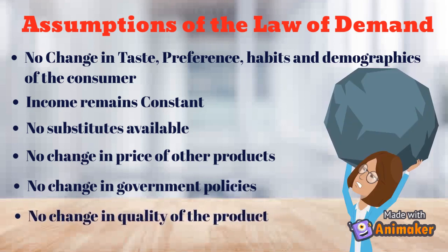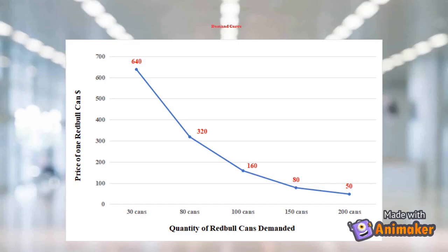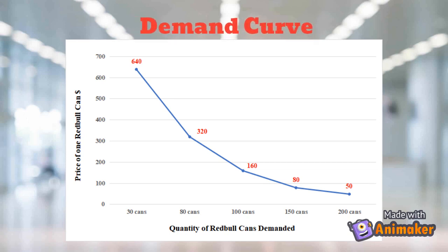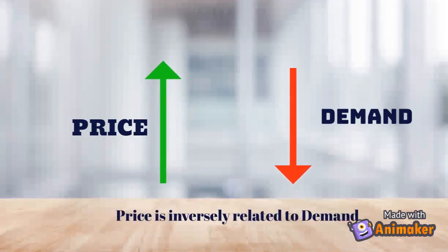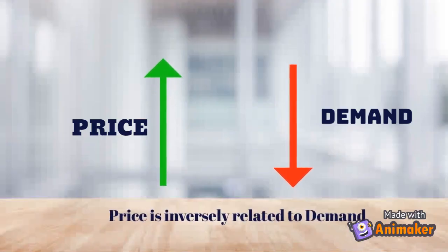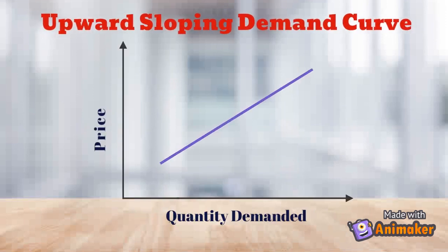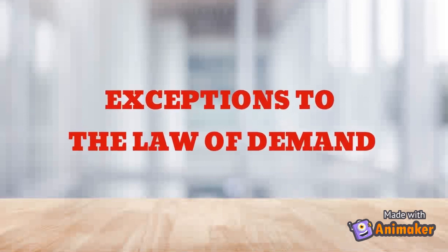Those were a lot of assumptions which need to remain constant. If you plot the example of the Red Bull cans on a graph, we get a demand curve. If you observe this, the demand curve is downward sloping from left to right, which reflects the inverse relationship between price and demand. However, this relationship may not always hold, and sometimes the curve may slope upwards.